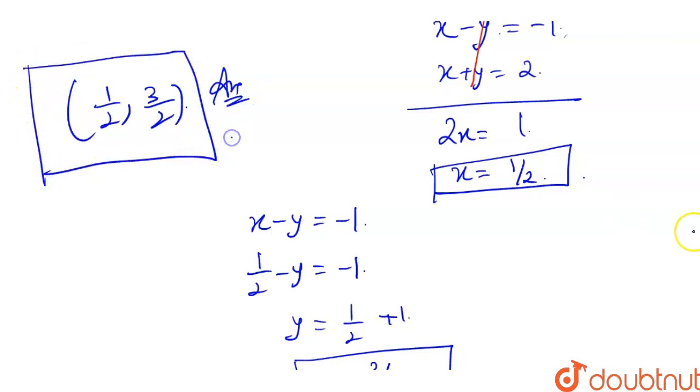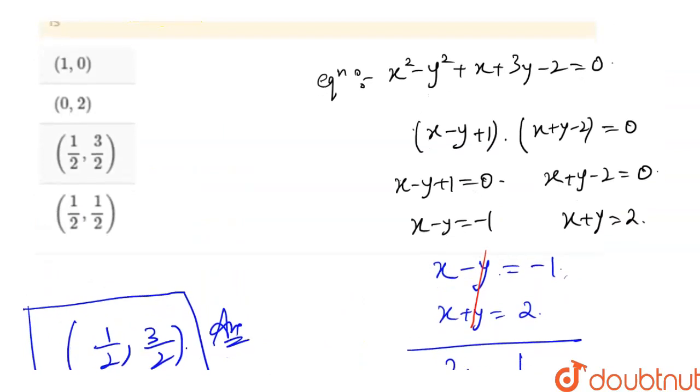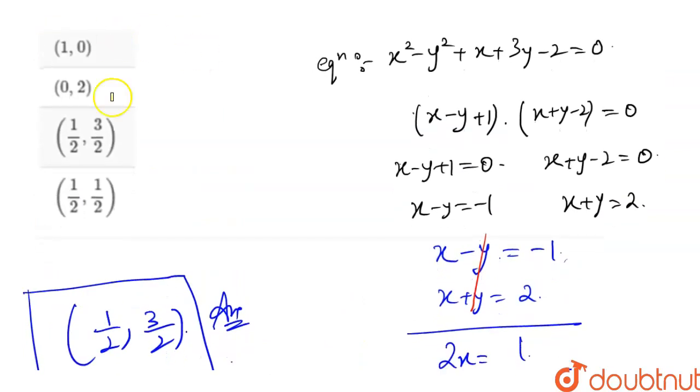So if my answer is (1 by 2, 3 by 2), then which option is it? My third option: 1 by 2, 3 by 2. So my answer is the third option.